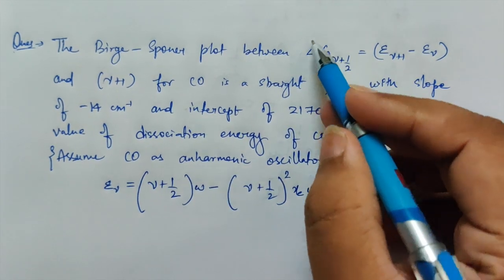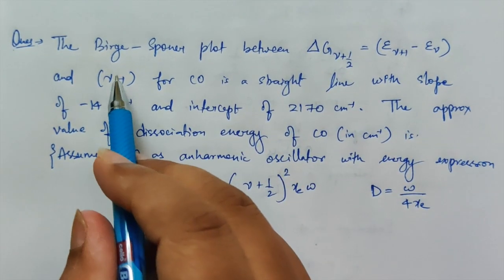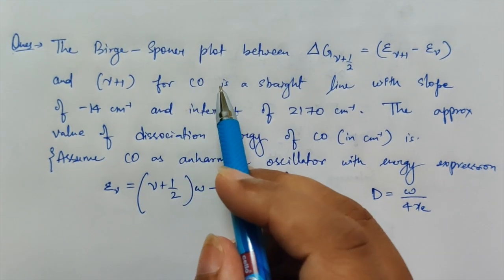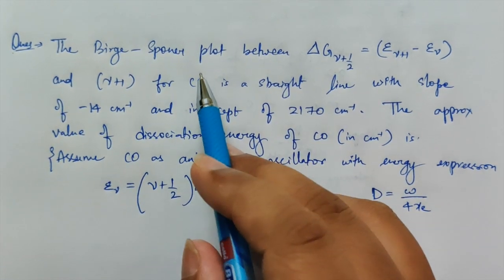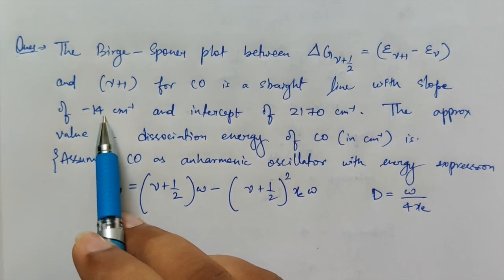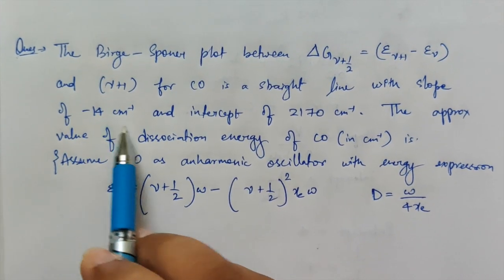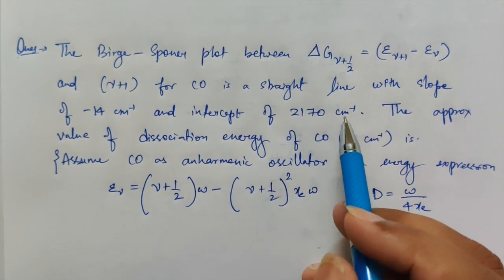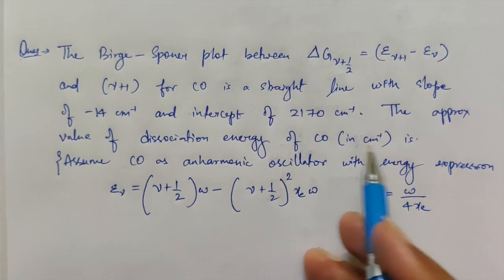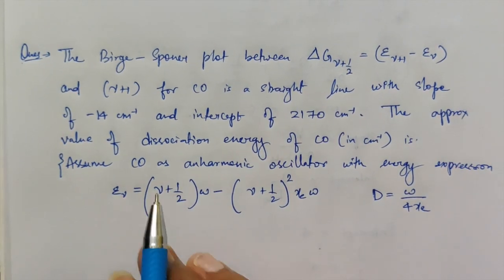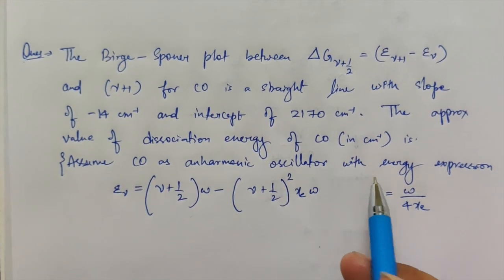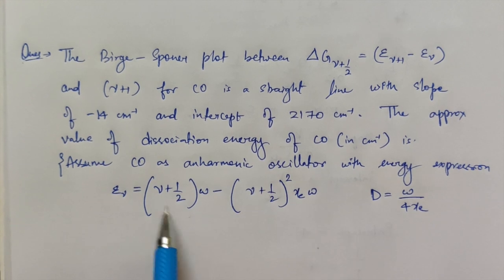The graph is plotted between ΔG(ν+½) on the Y-axis and (ν+1) on the X-axis. For carbon monoxide (CO), this is found to be a straight line with a slope of minus four centimeter inverse, and an intercept of 2170 centimeter inverse. The approximate value of dissociation energy is being asked for carbon monoxide in centimeter inverse.